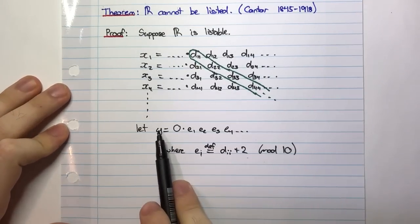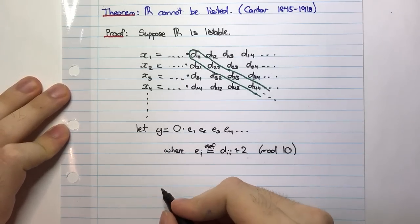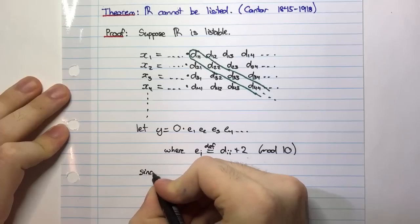Now, this here is a real number. Y is some real number. So since Y is a real number, I can say since Y is real,